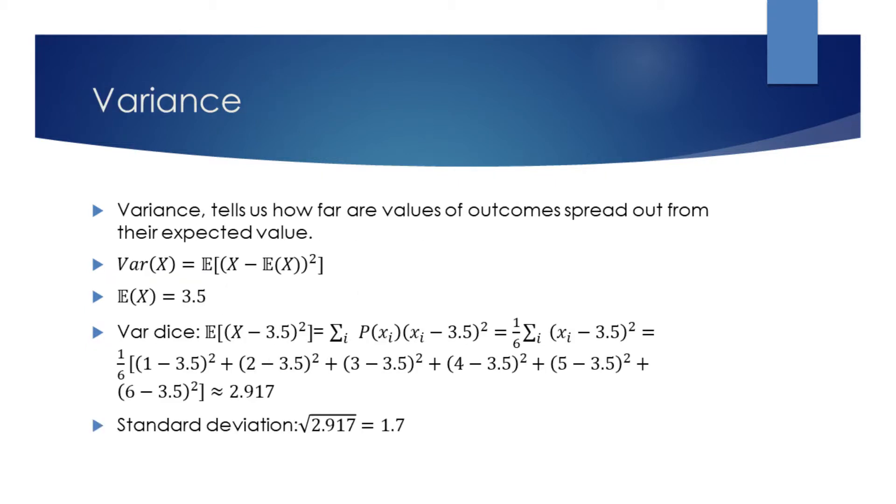Variance tells us how far our values of outcomes spread out from their expected value. Higher is the variance, less likely it is for an outcome to be close to the average, and vice versa.